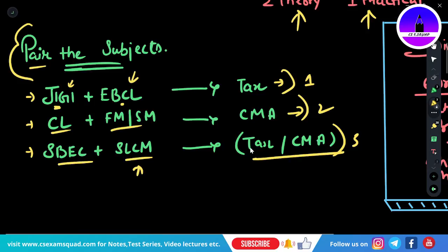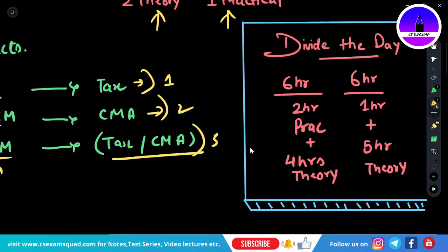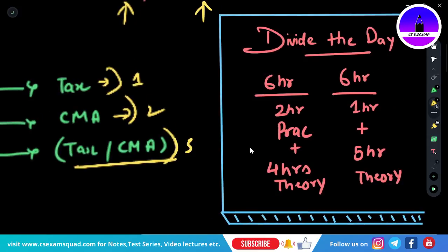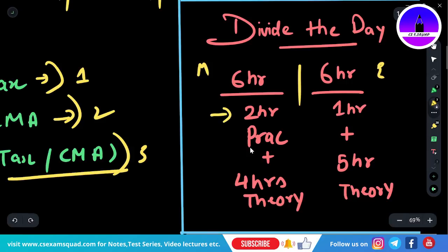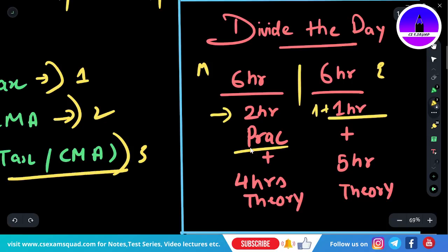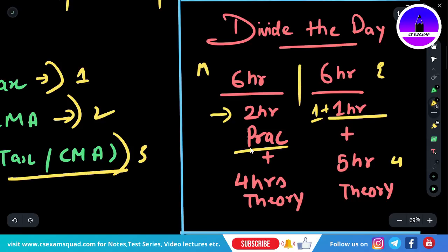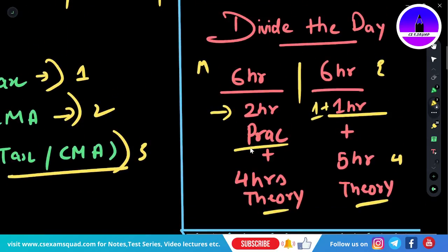Pair the subjects according to your comfortability. As a both-group student, divide the day into 12 hours - six hours in the morning and six hours in the evening. From the six hours, give two hours to practical subjects and four hours to theory. If practical feels tougher, you can add one more hour to practical and reduce theory accordingly.